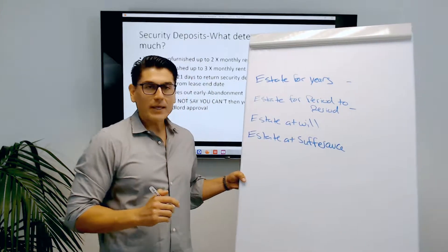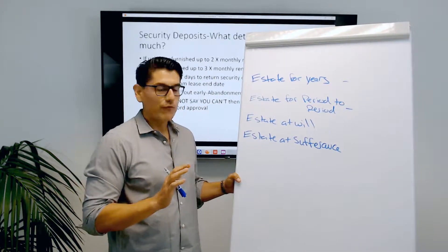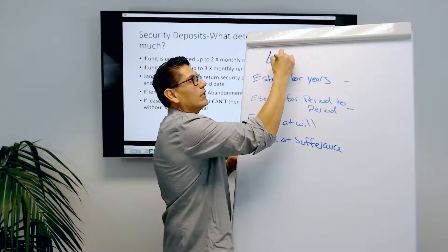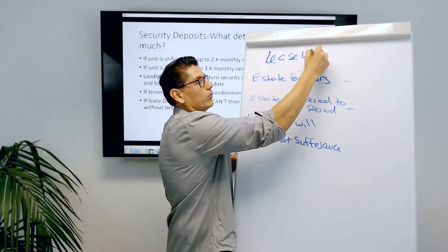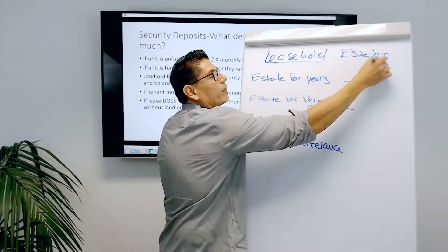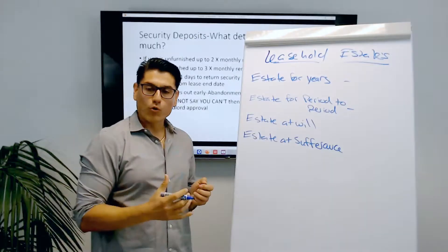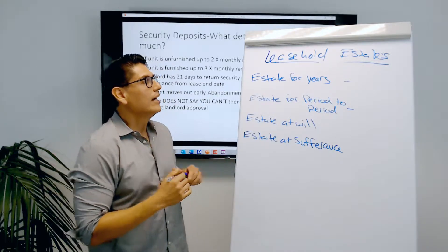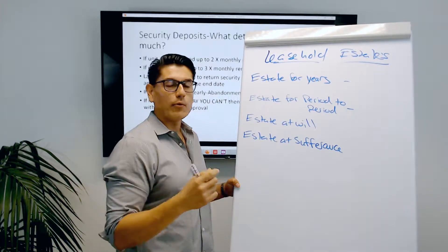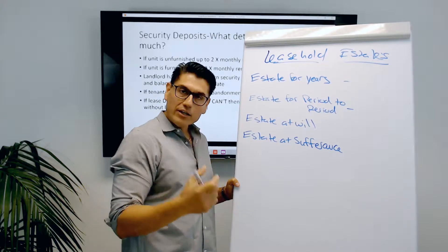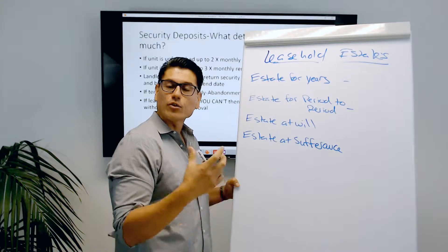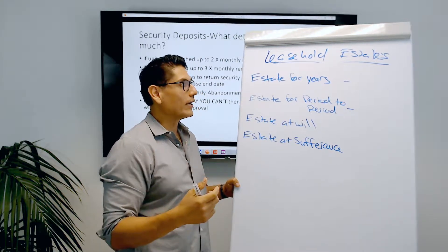We first need to make a distinction between a few types of estates that fall under leasehold estates. Freehold estates were ownership of real property. Leasehold estate is an interest in real property, but not ownership. When you have a lease, you have an interest in real property — a contractual right to physically possess it, the right of possession, although you don't own it.